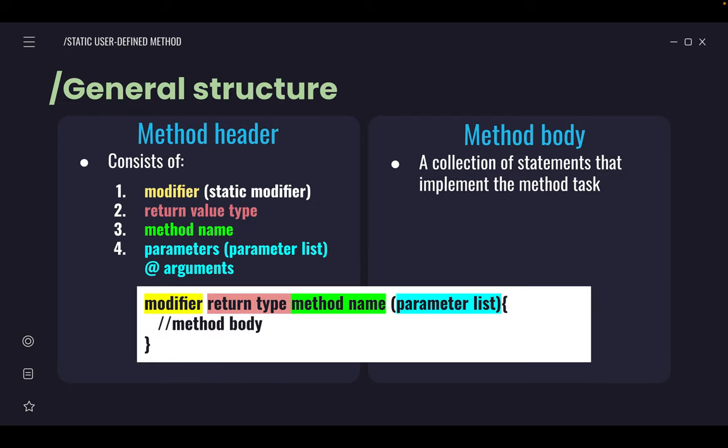We're going to look at the general structure of method definition. When we want to define a method, what do we need, what do we need to do? In order to define a method, we need to have first the method header—the head of the method. The method header consists of modifier, return type, method name, and then the parameter list or we call it argument. Parameter list can be more than one. Then we also have a method body. Method body means whatever inside the method after the curly bracket. Whatever happens after the curly bracket and before the closing curly bracket, all of that is considered the method body. That is where all the operations, all the processes happen—calculations, whatever.